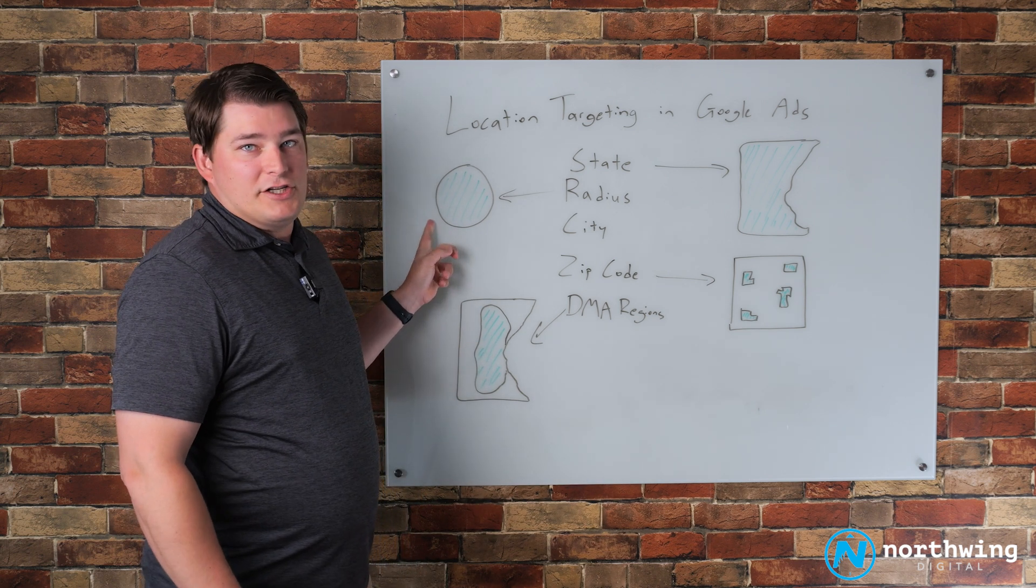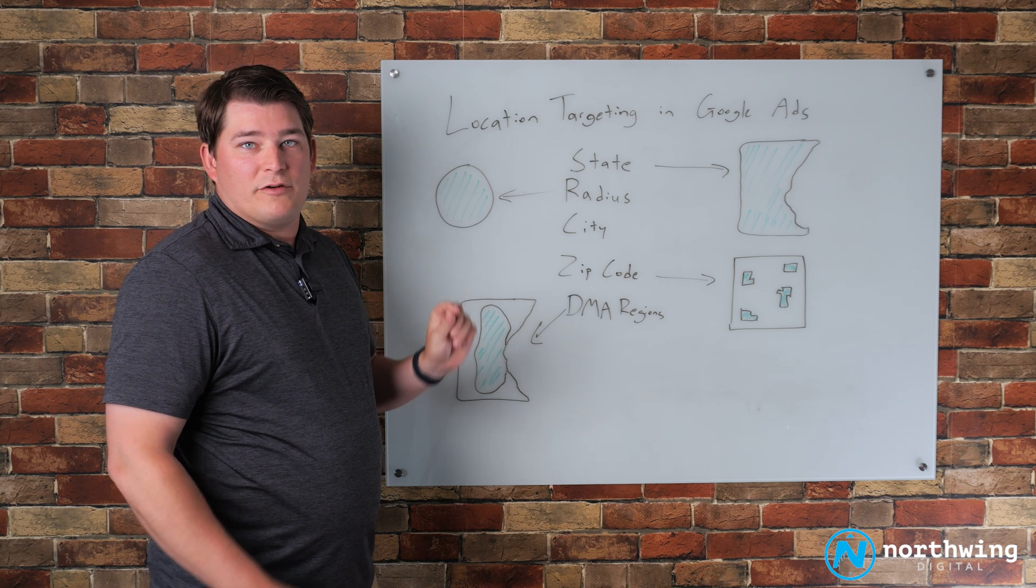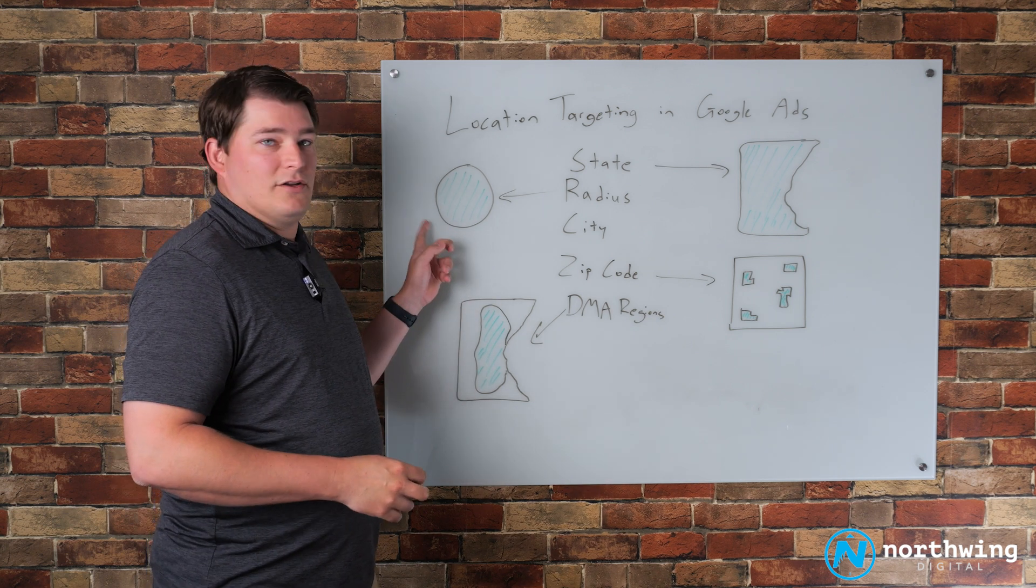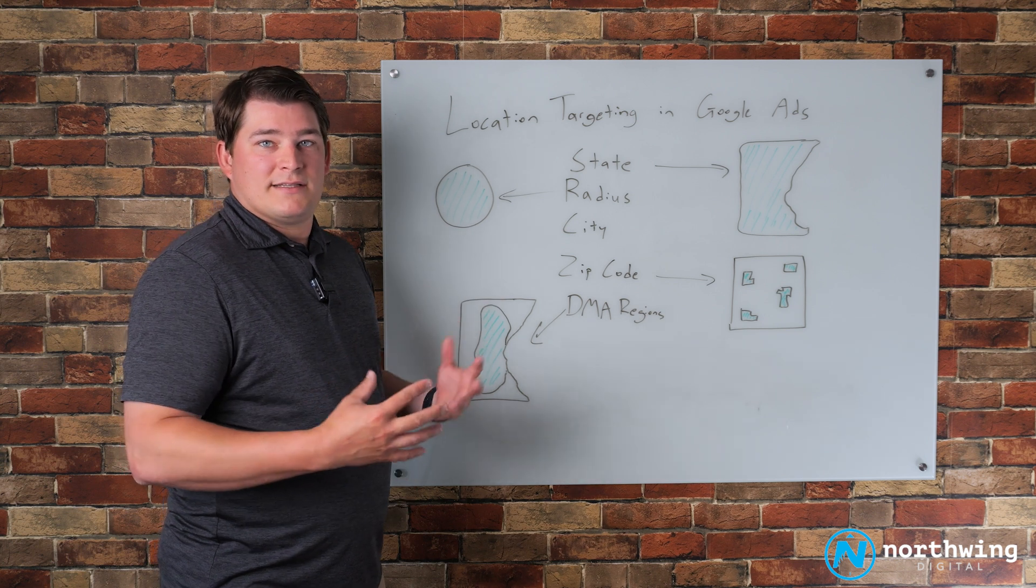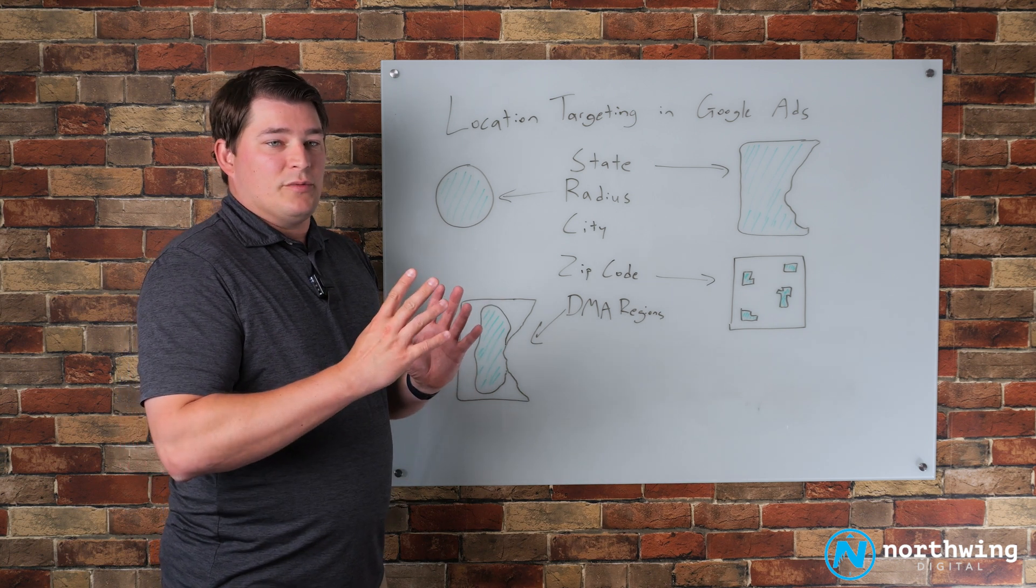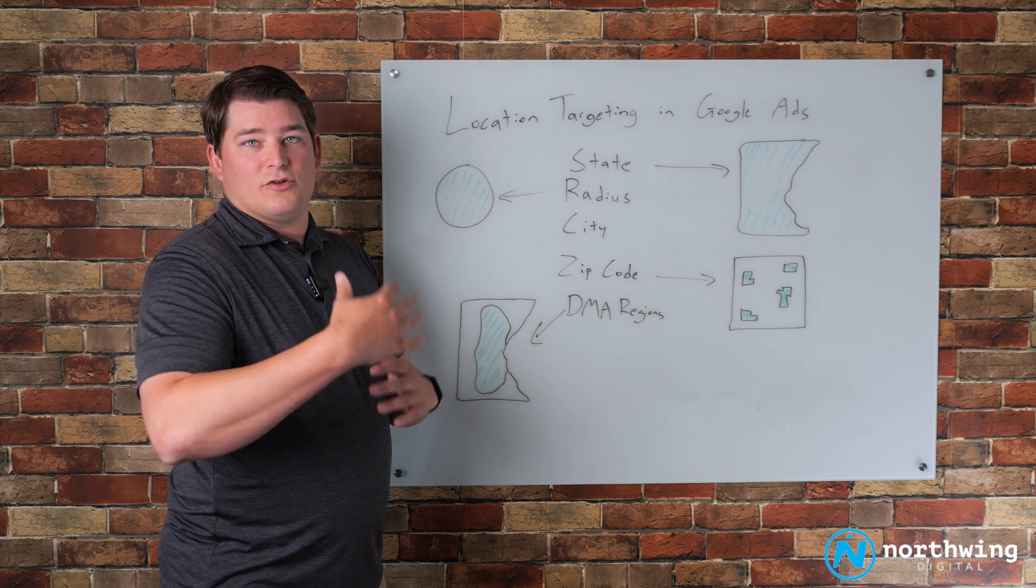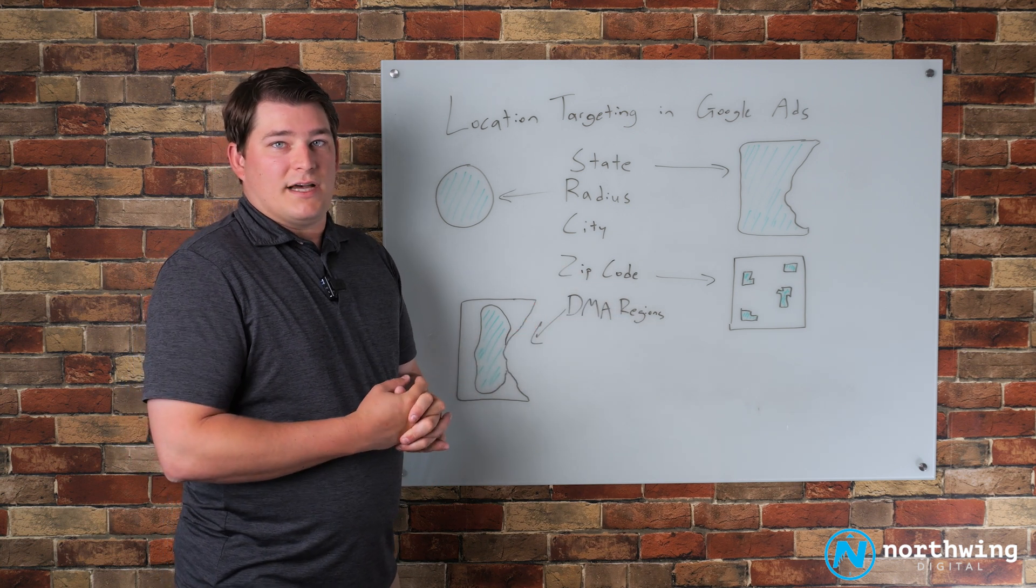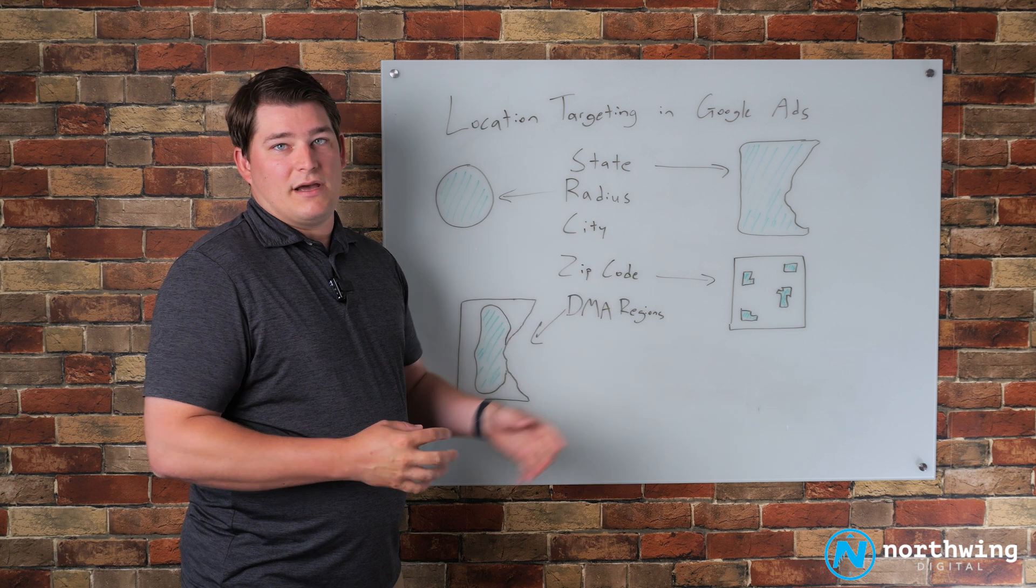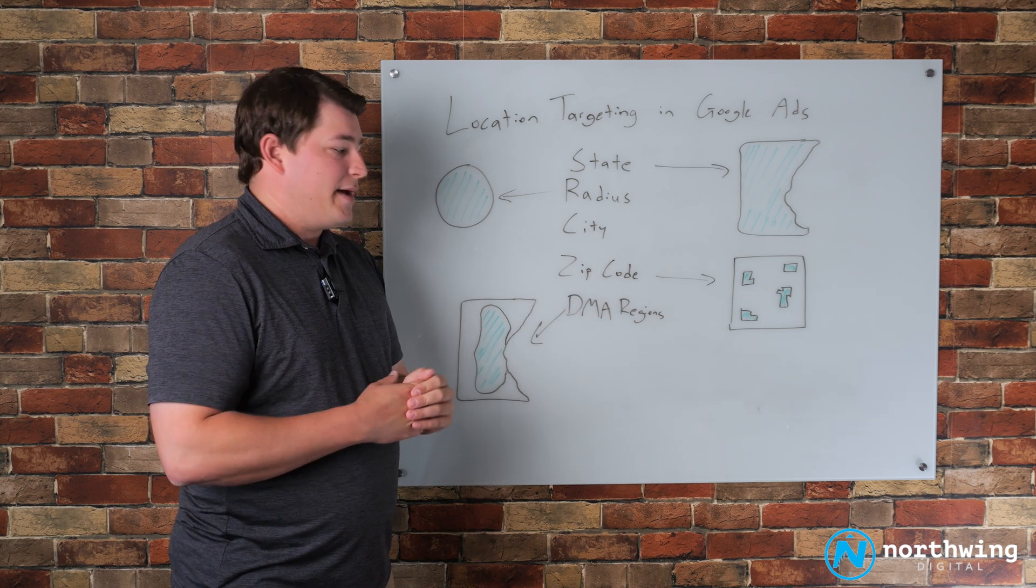If you're running campaigns for a local service business, I would highly encourage you to explore the pin mode functionality within Google Ads and look at switching your location targeting to radius-based targeting. I think you'll be happy with what you see in terms of the increased volume, the increased visibility of your ads, as long as it's still consistent with your goals. This is an issue that we commonly see that holds accounts back.